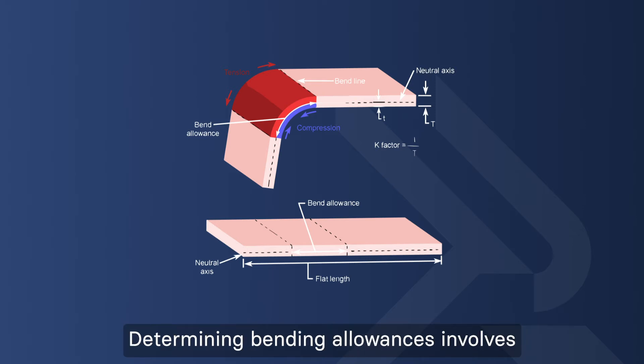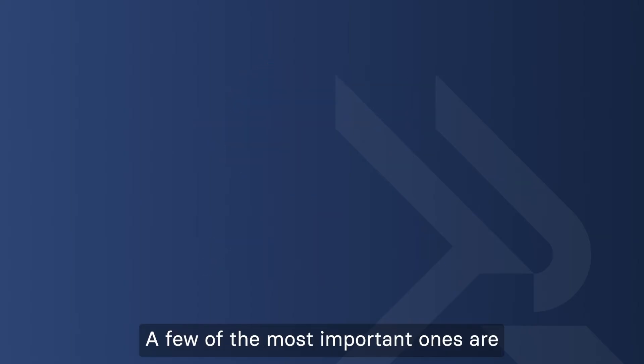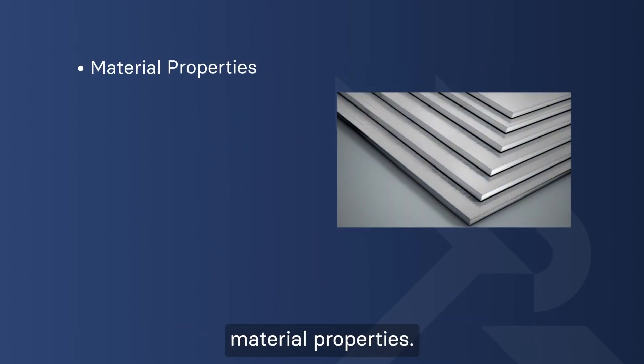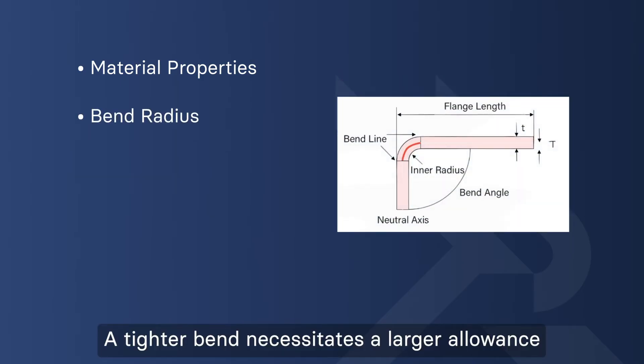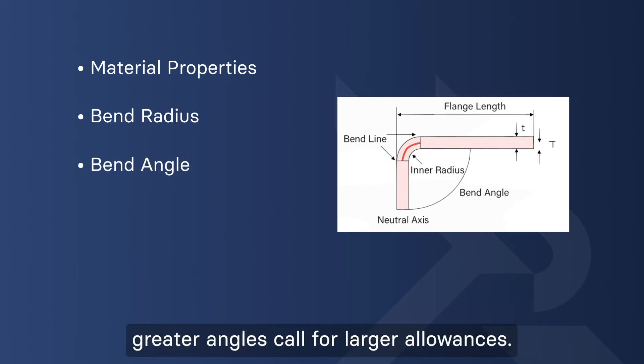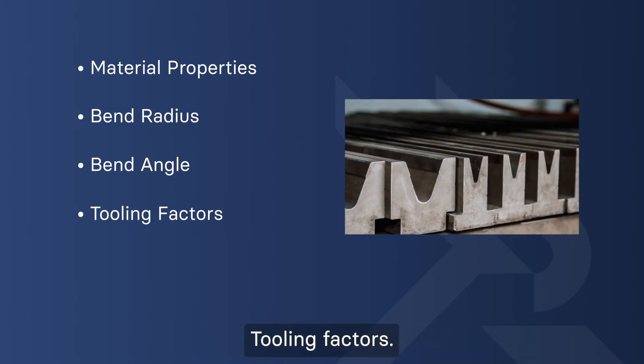Determining bending allowances involves considering several factors. A few of the most important ones are: material properties, different metals display varying tendencies for spring-back; bend radius, a tighter bend necessitates a larger allowance; bend angle, greater angles call for larger allowances; and tooling factors, the specific tools and equipment being used.